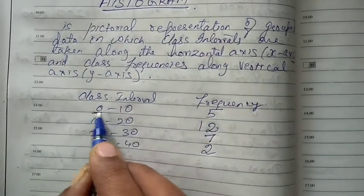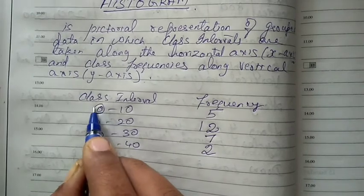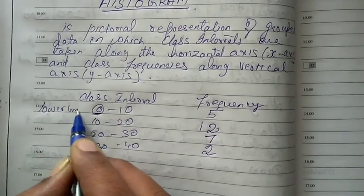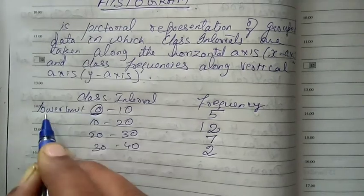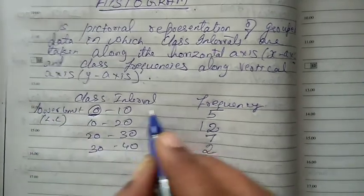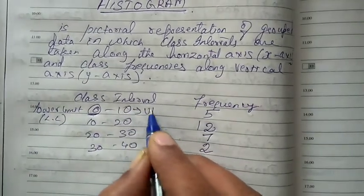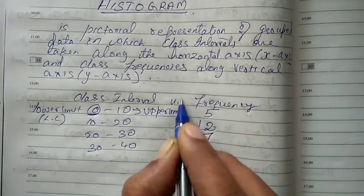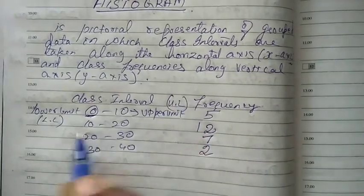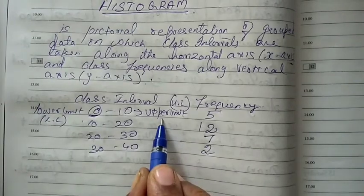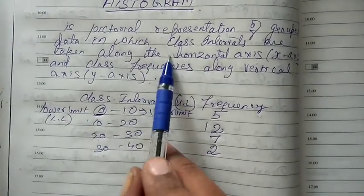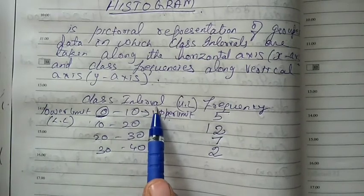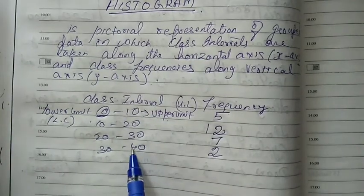When you have a class interval, the first number we call it as lower limit — LL. And this part we call it as upper limit — UL. According to the histogram definition, this class interval we represent on the X-axis, and frequency on the Y-axis.